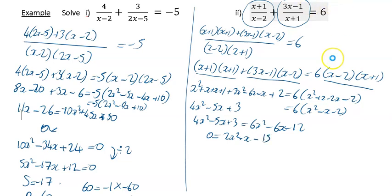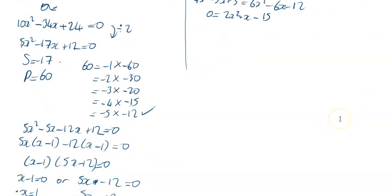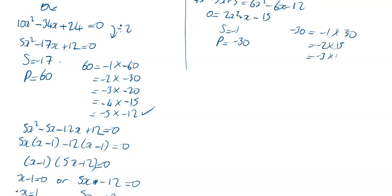Thankfully this one factorizes — if it didn't you'd just use the quadratic formula. My sum is equal to minus 1 and my product is equal to minus 30. Going through the factor pairs: minus 1 times 30, minus 2 times 15, minus 3 times 10, minus 5 times 6, minus 6 times 5. There's my pair of numbers because minus 6 and 5 add to give minus 1.